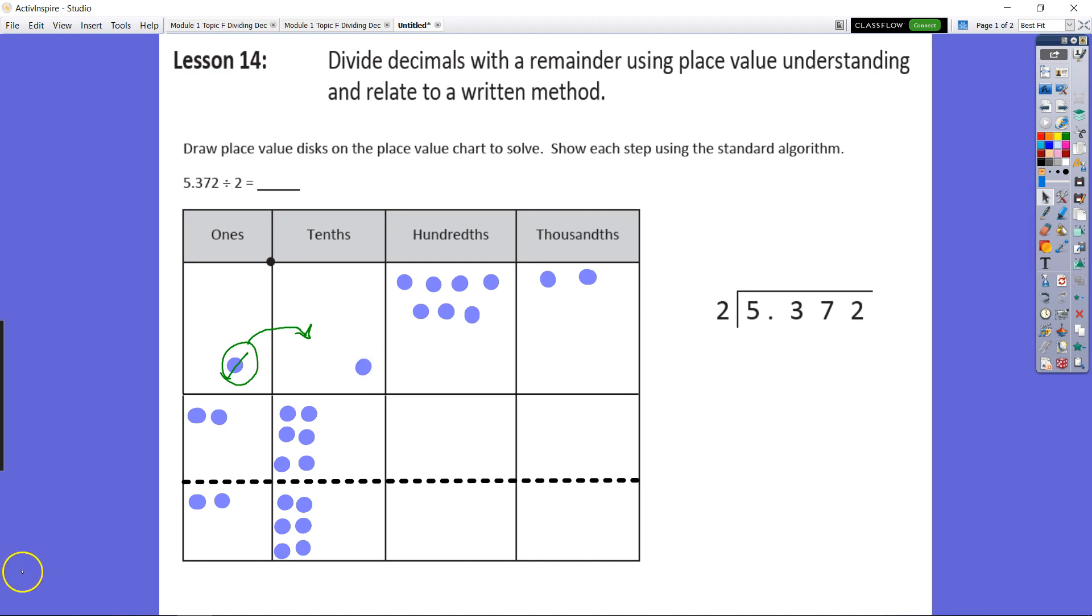What do we need to do with that one tenth? We need to regroup it. Our one tenth is regrouped as ten hundredths. Now we have ten hundredths that we regrouped plus our original seven hundredths to give us seventeen hundredths. Let's divide those seventeen hundredths into two groups.